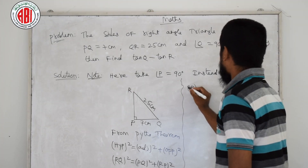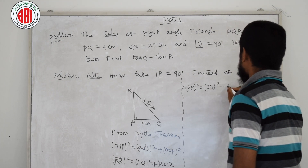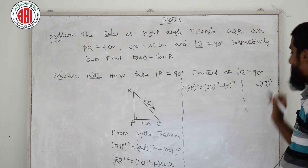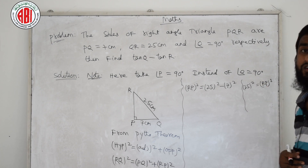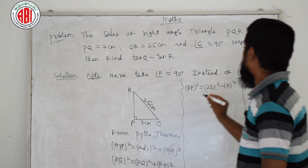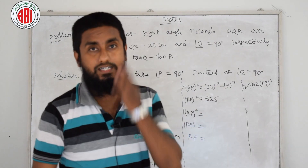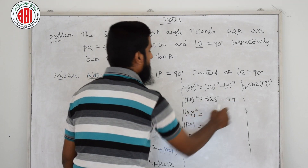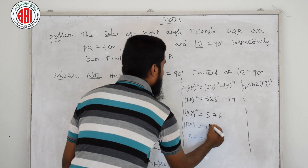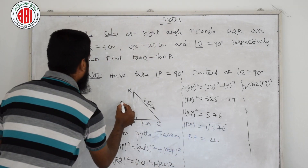We need to find RP. Rearranging: RP squared equals 25 squared minus 7 squared. That is 625 minus 49, which equals 576. So RP squared equals 576, and RP equals the square root of 576. The square root of 576 is 24. So RP equals 24 centimeters.